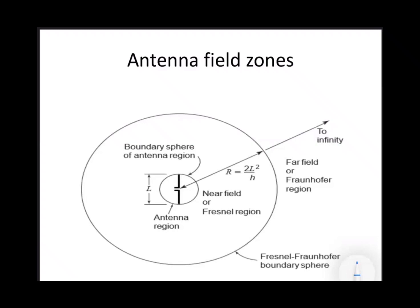There is a diagrammatic representation of the antenna field zones. It is called a zone because it is in a particular region, classified into near field and far field — near zone and Fraunhofer zone. That is why it is called antenna field zones. In the diagram, we have considered a short dipole antenna. Depending upon the length of the antenna — whether it is a short dipole antenna, wire antenna, horn antenna, or parabolic antenna — the length of the antenna is always an important factor. This short dipole antenna has pole one and pole two, and the total length is designated as L.